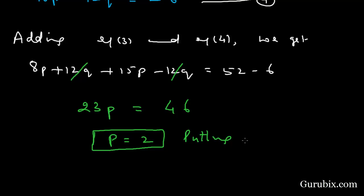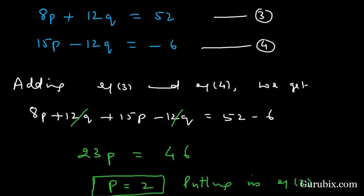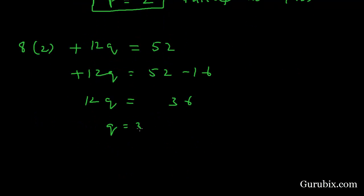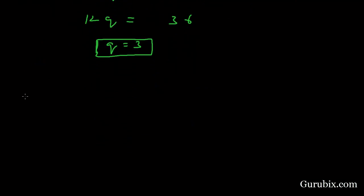to get the value of q. Equation 3 is 8p plus 12q equals 52. This means 8 times 2 plus 12q equals 52, so 12q equals 52 minus 16. Therefore 12q equals 36, which means q equals 3. Now we have the values of both p and q, so now we